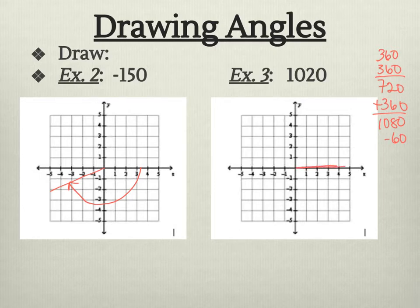So I'm going to, this would be my first ray, my initial side. And then I'm going to go around once. I'm going to go around twice. And then I'm going to go around 60 less, which we've already done. So it's going to come around to about there. And then we draw that ray. And that would be 1020 degrees.